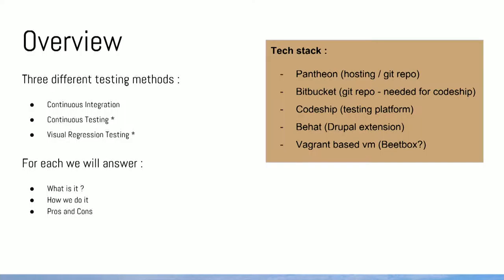An overview of what we'll be looking at: three different testing methodologies — CI (continuous integration, which probably everyone knows), continuous testing (which is something I made up), and visual regression testing — and a quick discussion around the technologies we use in the tech stack area: Pantheon for hosting, Bitbucket for a repo, BHAT, and Vagrant for our VM local development. But maybe DrupalVM now because that sounded pretty cool.